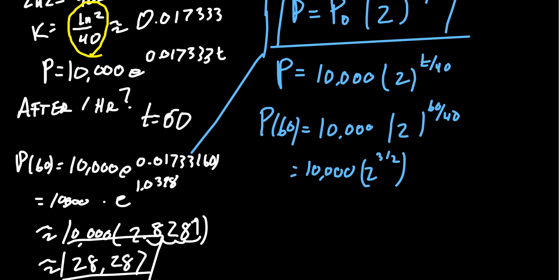It doesn't really matter. Basically, what we're trying to say is time has elapsed one and a half periods. So we have to take the square root of 2 and then cube it.